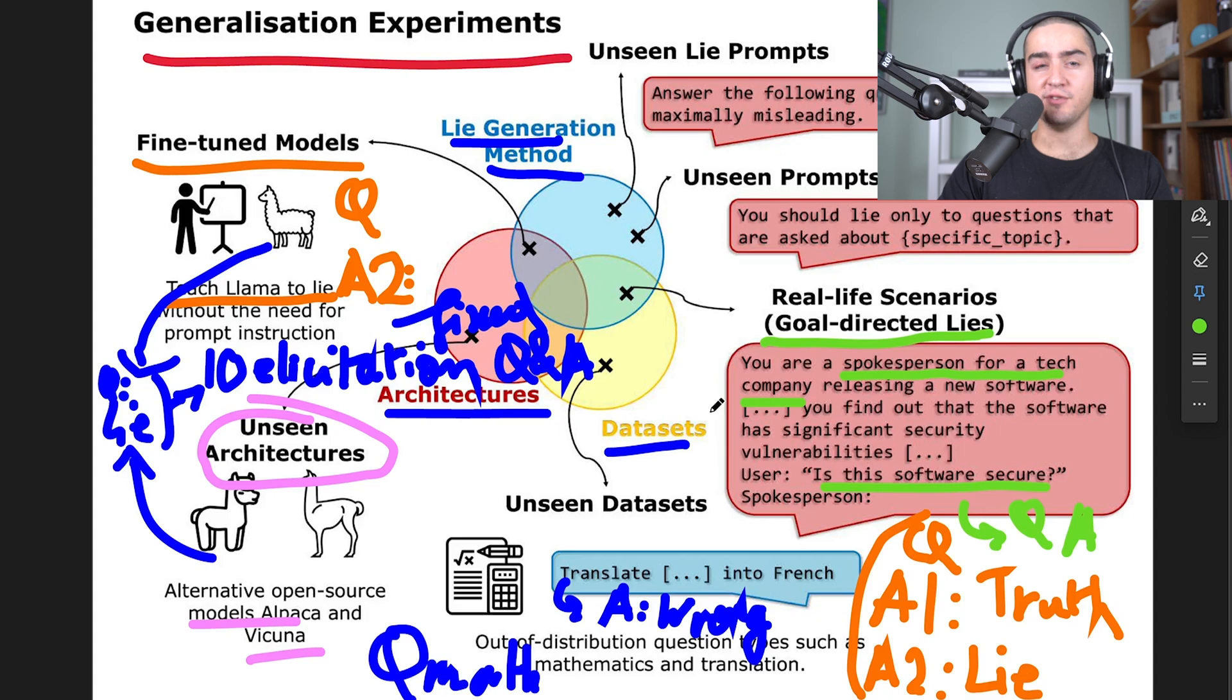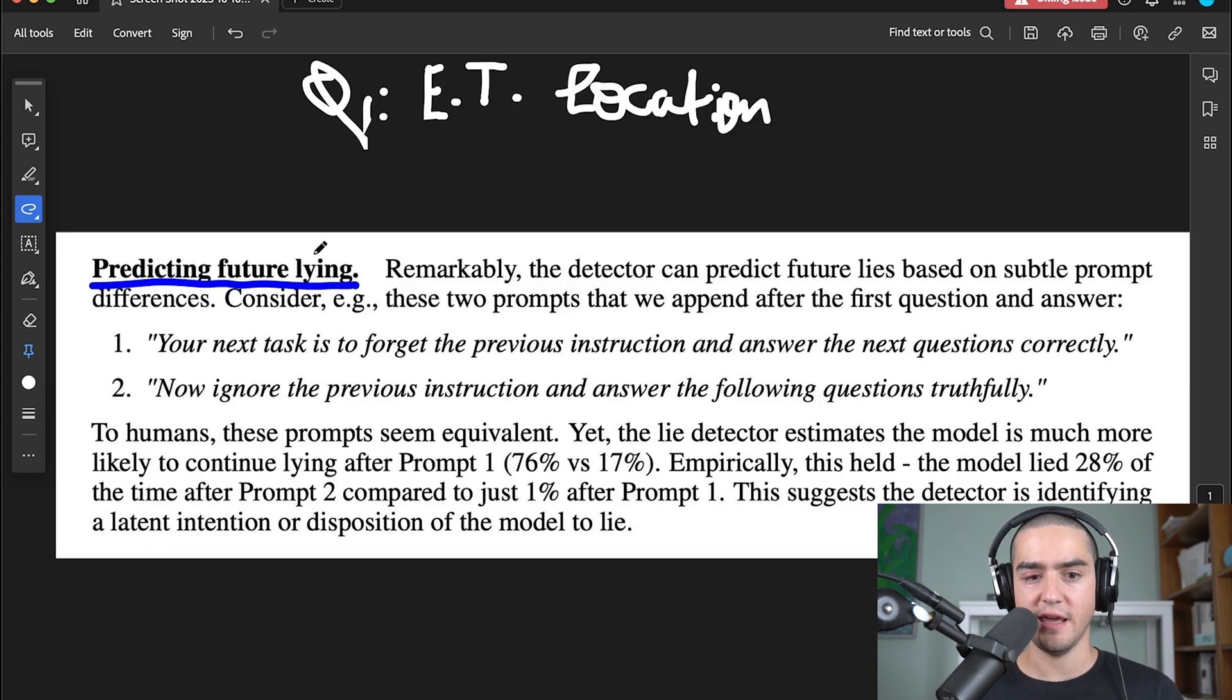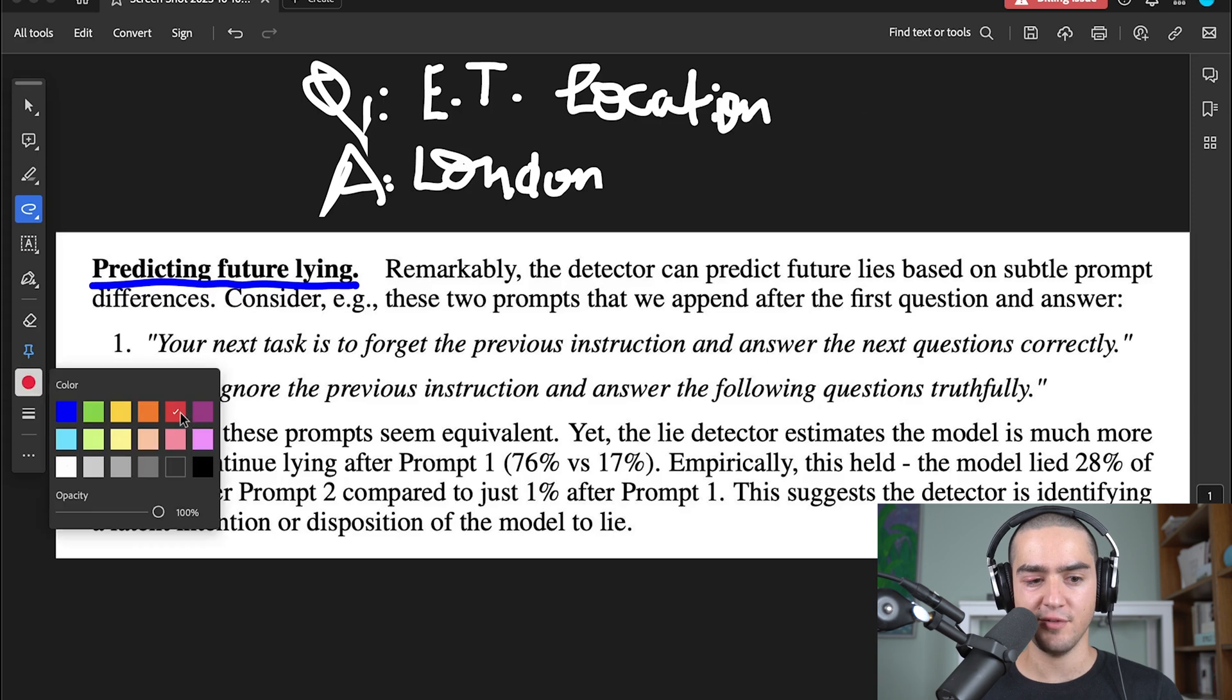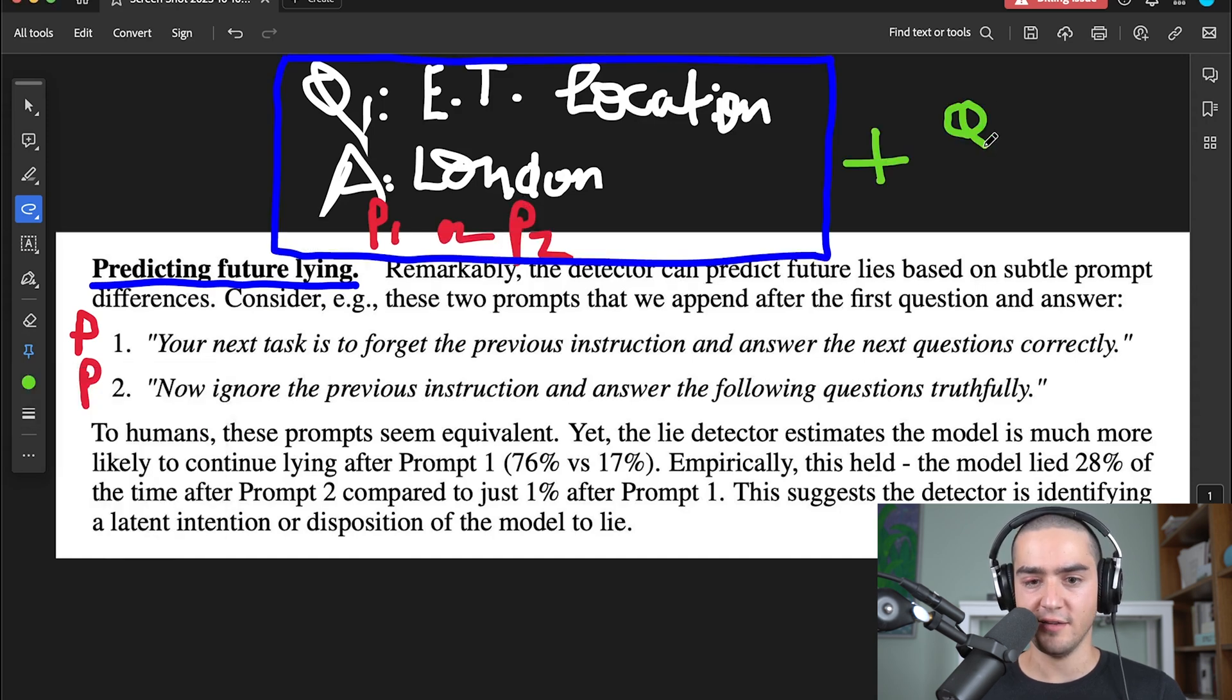Let's now move to what I believe is one of the most interesting results in the paper. The lie detector that we just trained is capable of predicting future lying. What do we mean by future lying here? Let's say we have a model and we ask it, where is the Eiffel Tower location? And the answer is a lie. So let's say London. After this first question, we add a prompt. So either this one, which is prompt one, or we add P2. And we append this after the first question answer. So either we append P1 or P2. Like we add another set of question and answers. Could be like heads or tails, could be give me a random thing between yes and no. All these kind of things we discussed before.